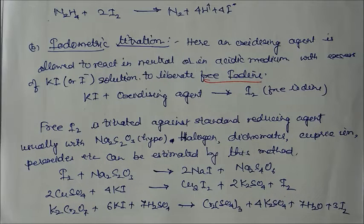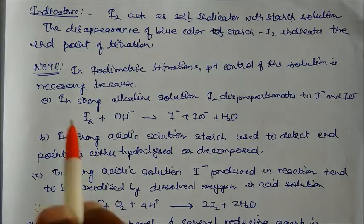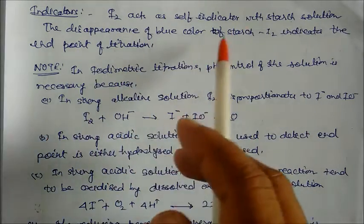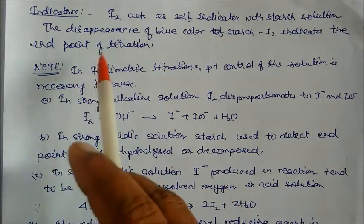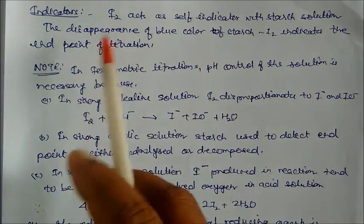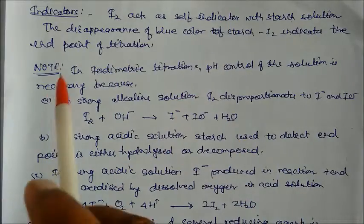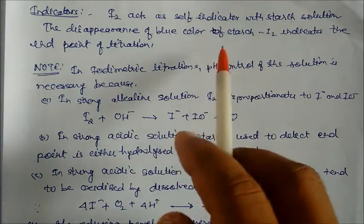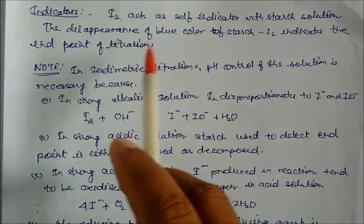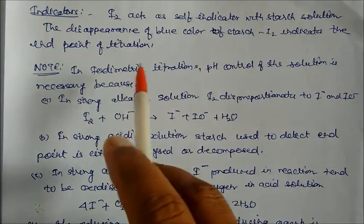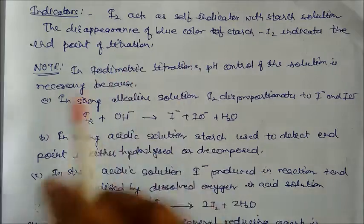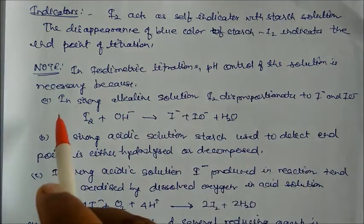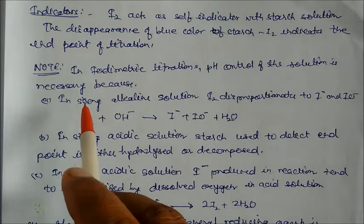Regarding indicators: iodine acts as a self-indicator with starch solution. The color of the starch solution becomes blue-black in the presence of iodine. The disappearance of the blue color of the starch indicates the end point of the titration. So starch acts as the indicator.